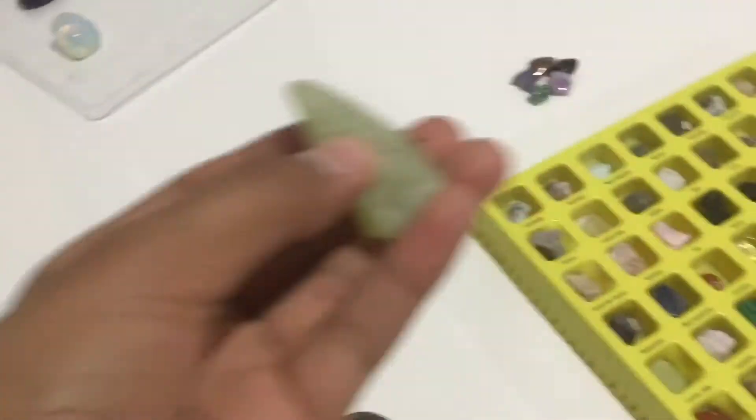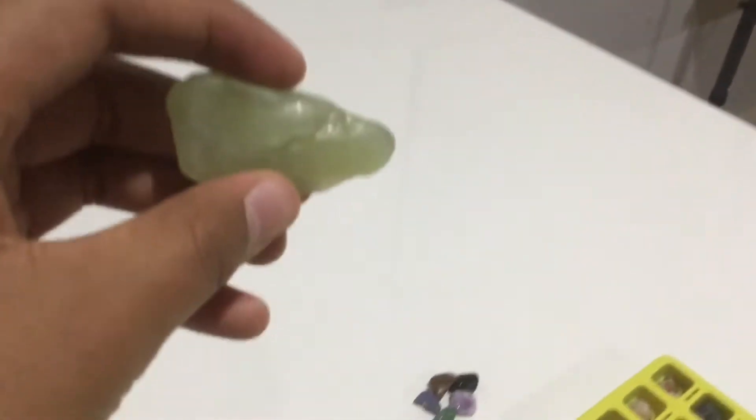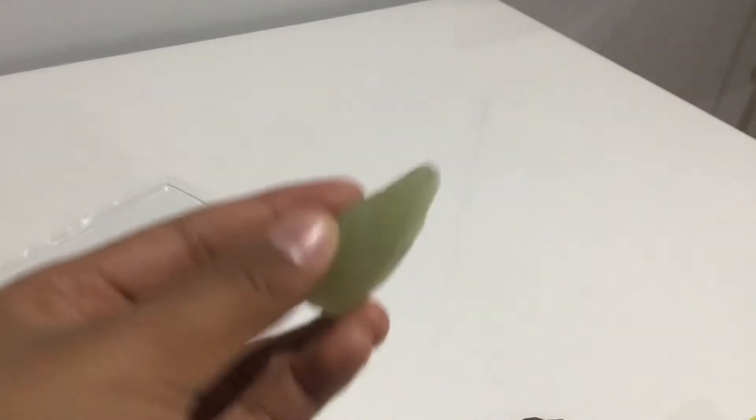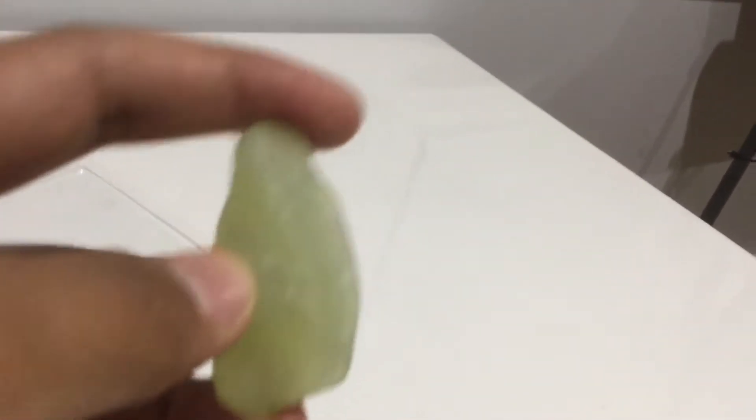Next up is jadeite, which is sometimes called jade. It's like a prized jewelry in China. It has this cool green, transparent type hologram mesh thing going on with it.